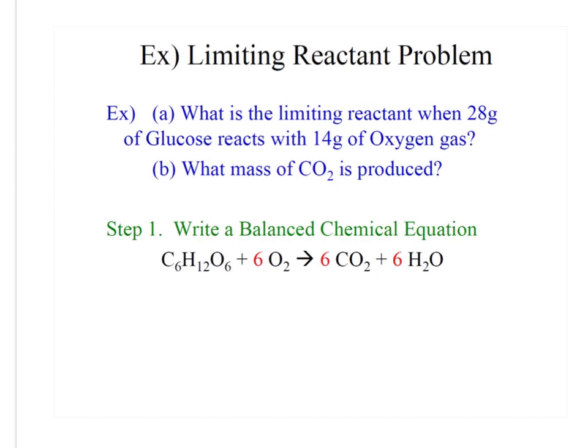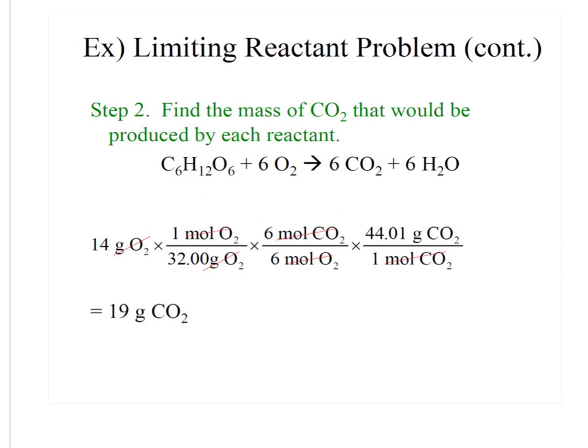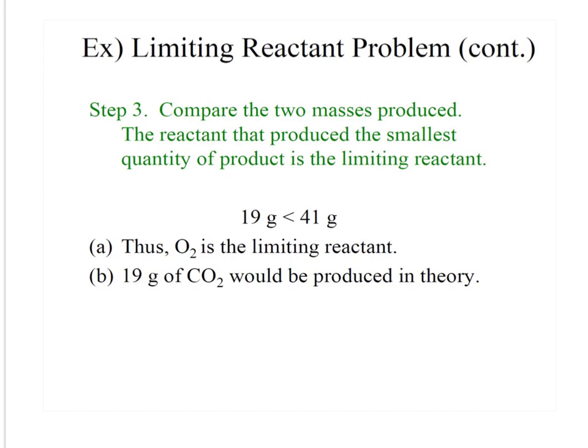So what is the limiting reactant when 28 grams of glucose reacts with 14 grams of oxygen gas? So we'll do that one first, and then we'll figure out what mass of carbon dioxide is produced. So first you write your balanced equation, then you're going to find the mass of carbon dioxide that would be produced by each reactant. Now we're going to compare the two masses that were produced. The reactant that produced the smallest quantity of the product is the limiting reactant. So oxygen is the limiting reactant. So we could only get 19 grams of carbon dioxide in theory, so that's our theoretical yield.